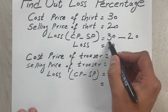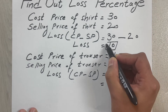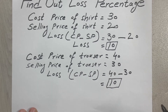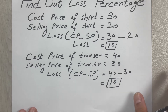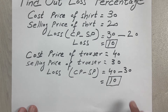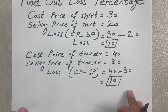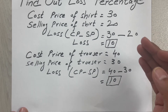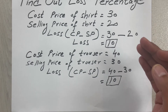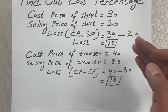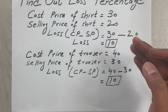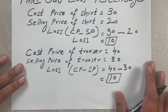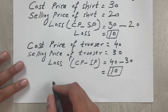You can see in the first deal we made a loss of 10, and in the second deal we also made a loss of 10 rupees or 10 dollars. But in one of these deals we made a bigger loss — even though the values look the same. We can find out which deal had a bigger loss by calculating the loss percentage.